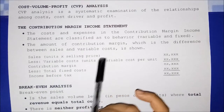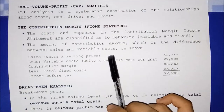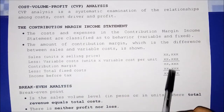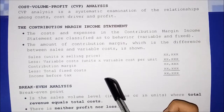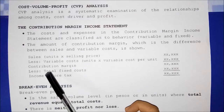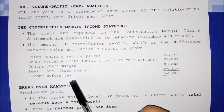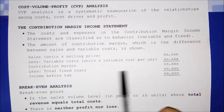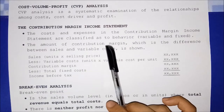The contribution margin is the difference between sales and variable cost. The pro forma of the contribution margin income statement is: Sales less Variable Cost equals Contribution Margin, less Total Fixed Cost, equals Income Before Tax. Its format is different from the traditional income statement where Revenue less Expenses equals Profit.